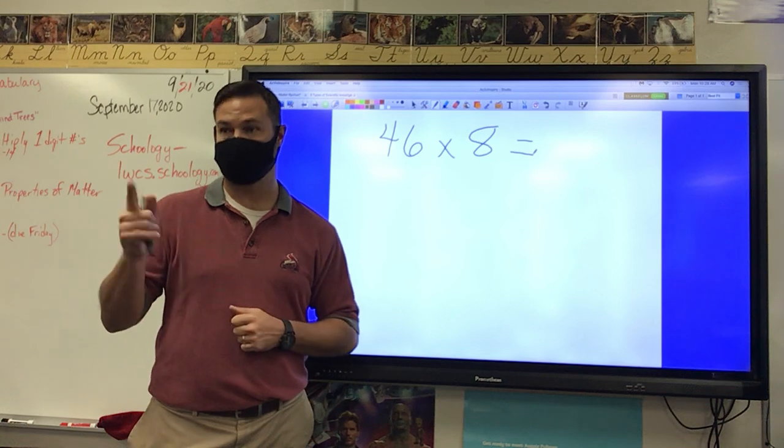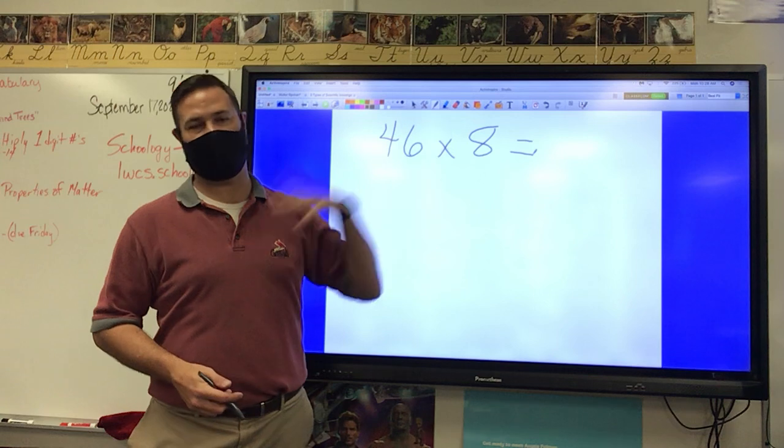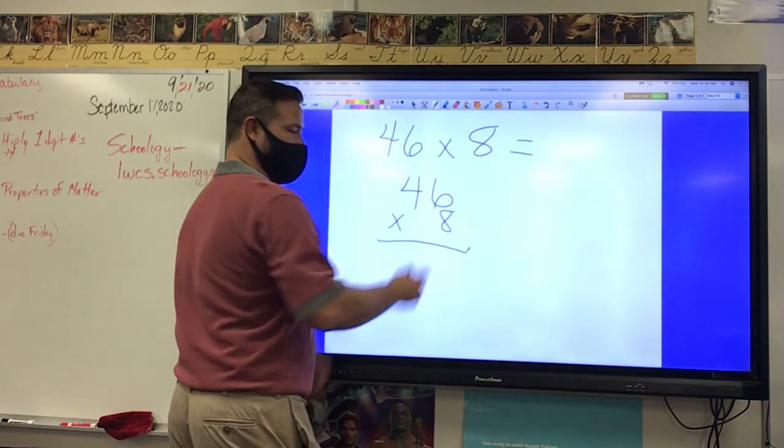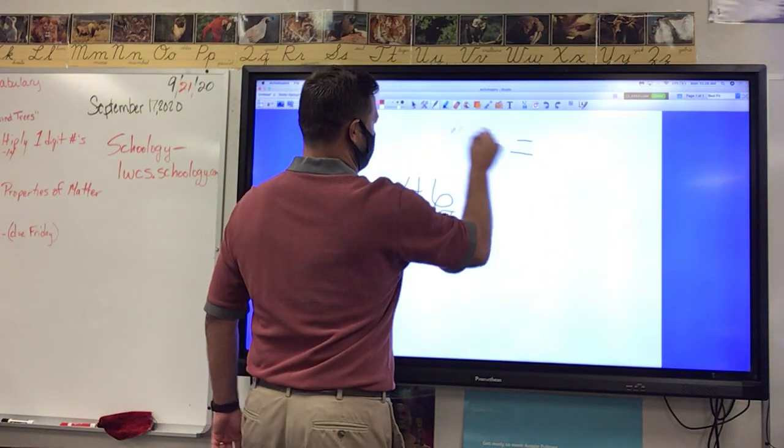What are you gonna do here? Yeah, you got to line it up. Guys, you can't do it sideways, I can't do it sideways, so we have to line it up. So it should be 46 times 8. You always put the bigger number on top. That'll help you out in the future.